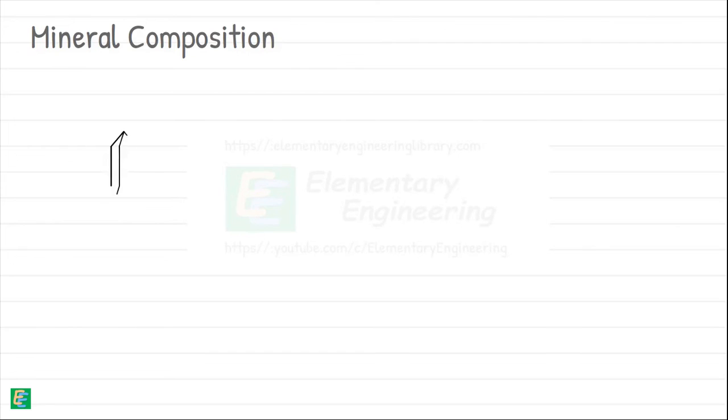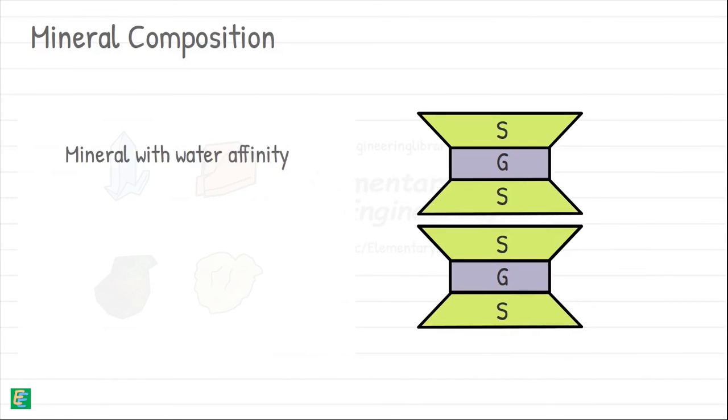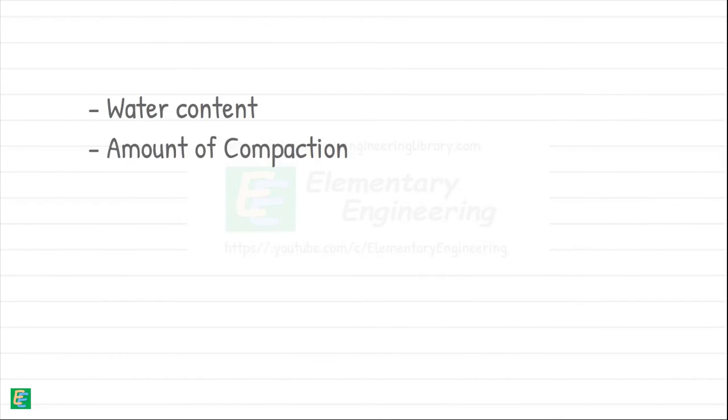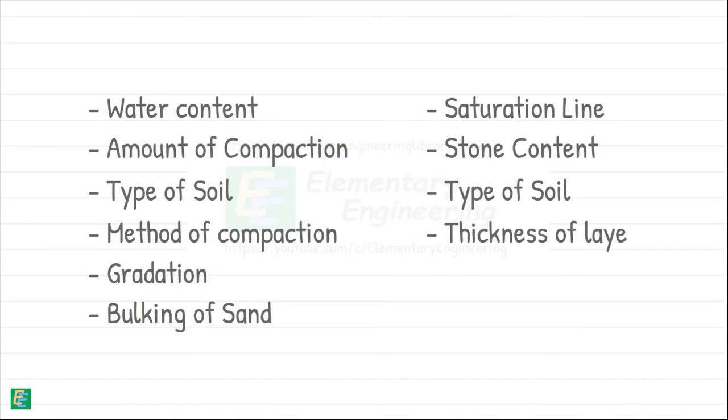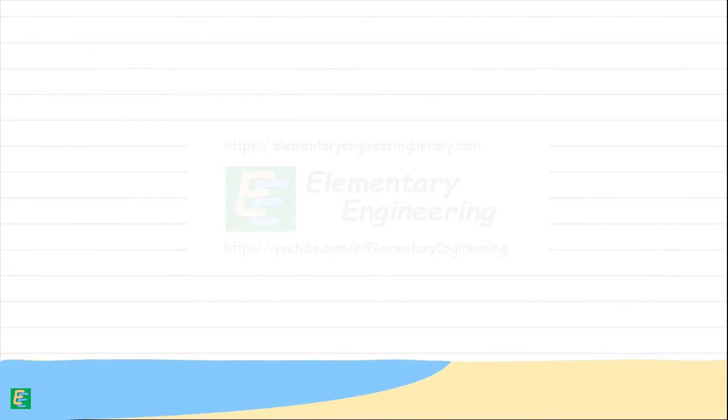Mineral composition of soil particles also plays a significant role in compaction. Certain minerals in the soil have a natural affinity for water molecules. They can attract water and hold it close to their surfaces and contribute to the soil's moisture-retaining capacity, affecting factors such as optimum moisture content and compaction density. All these various factors play a crucial role in compacting the soil. Understanding and managing these factors is essential for achieving effective compaction, ensuring a stable foundation for construction projects.